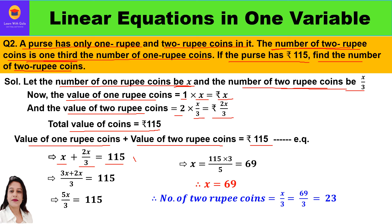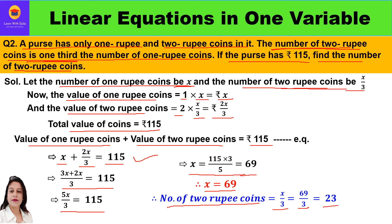So we have: x plus 2x upon 3 equals 115. This is the linear equation we will solve. Taking the LCM of 3: 3x plus 2x upon 3 equals 115, so 5x upon 3 equals 115. Cross-multiplying, x equals 115 into 3 divided by 5, which equals 69.